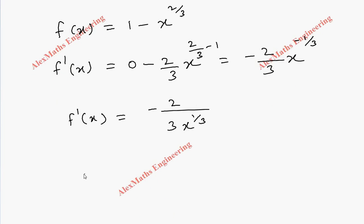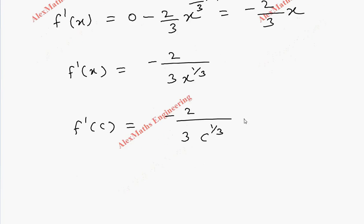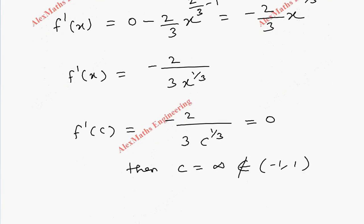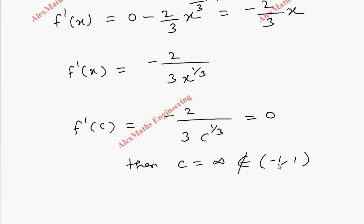Let's change this in terms of c. f dash of c equal to minus 2 by 3 c power 1 by 3. If I want this to be 0, then c should be infinity. Only then anything divided by infinity is 0. But this infinity does not belong to the given interval minus 1 comma 1. So as the question states, there is no number c in this open interval so that f dash of c equal to 0. We don't get the value of c in this interval because infinity is not defined there.